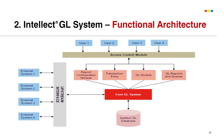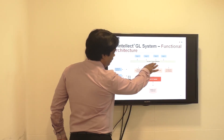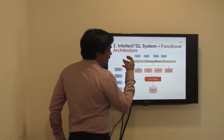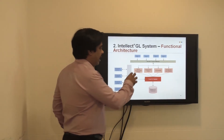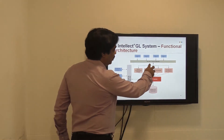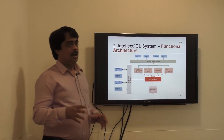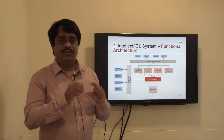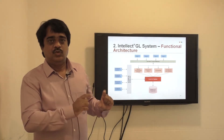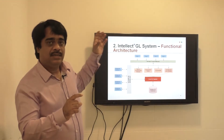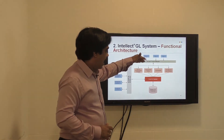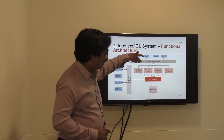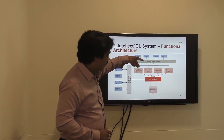All these modules interact for all accounting-related chart of accounts to our general ledger core, and this is controlled by the access control module. The access control module gives the power to differentiate what access each user is going to have. User one can have different access, user two can have different access — each user can have a different set of activities under a specific module, controlled by the access module.